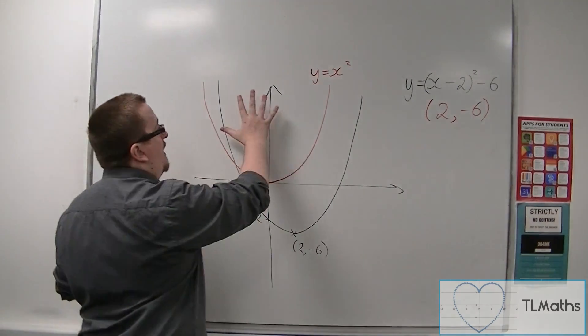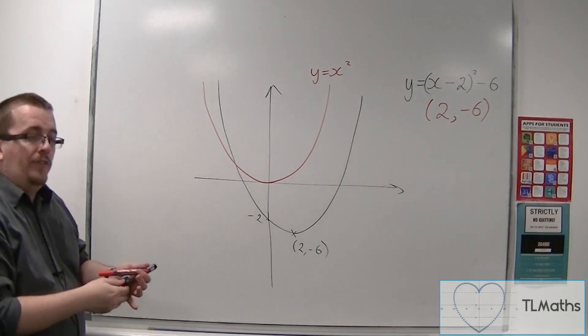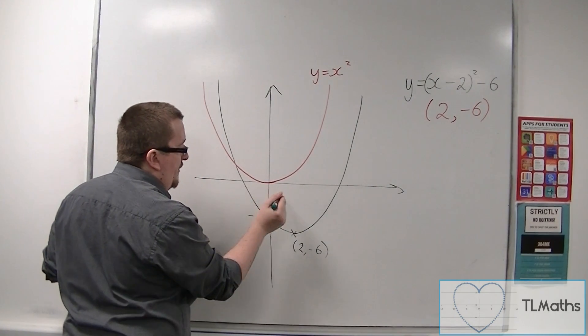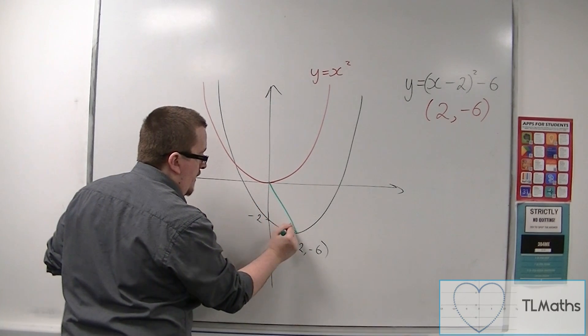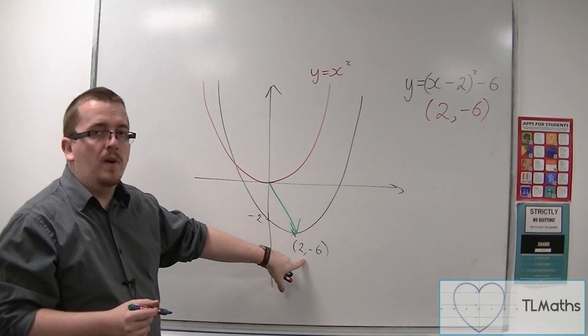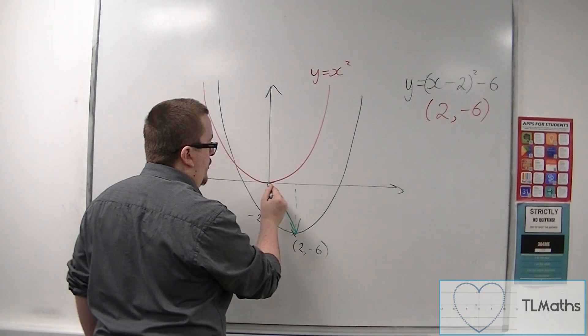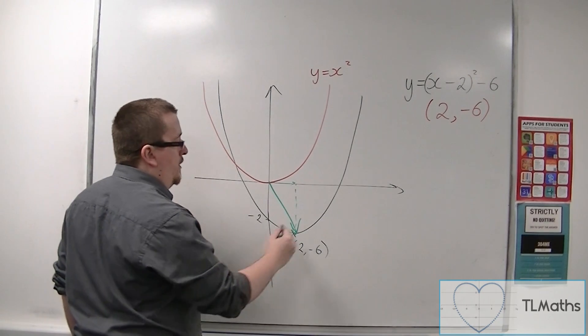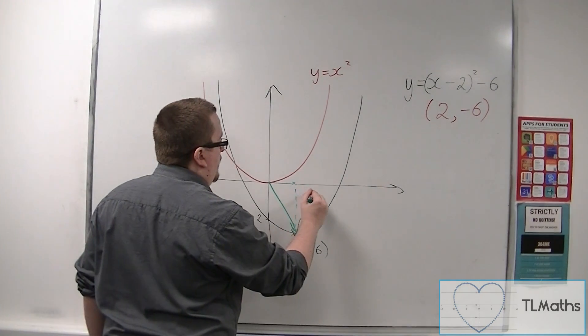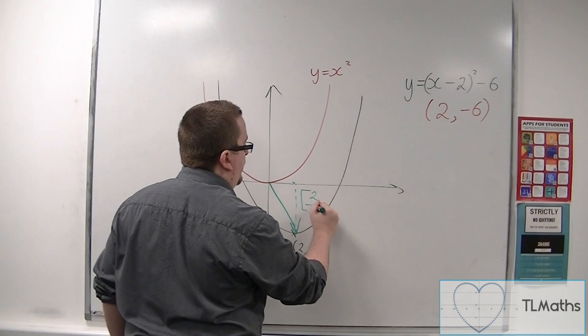And so because I can do that moving of the curve from one to the other, we can say that effectively I have picked up and moved y equals x squared so that its vertex now sits not at 0, 0 but at 2 minus 6. And so effectively the curve has travelled 2 in the x direction and minus 6 in the y direction. We can say that it has been translated by a vector 2 minus 6.